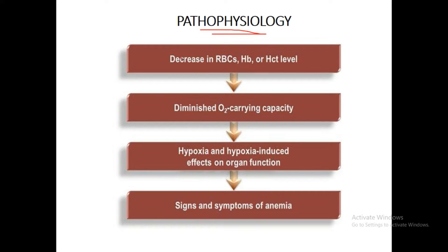Pathophysiology of anemia: whenever there is a decrease in RBC count, hemoglobin concentration, or hematocrit (packed cell volume), it diminishes oxygen-carrying capacity of the blood. This causes hypoxia — a lack of oxygen at the tissue level — which induces effects on organ function, leading to the signs and symptoms of anemia.